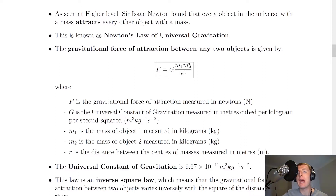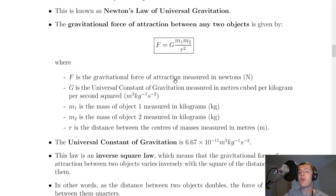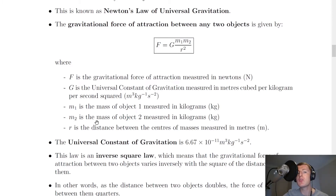F equals G times M1 M2 over R squared, where F is the gravitational force of attraction measured in Newtons. G is the universal constant of gravitation measured in metres cubed per kilogram per second squared, and that is on the data sheet in your exam. M1 is the mass of object 1 measured in kilograms, M2 is the mass of object 2 measured in kilograms, and R is the distance between the centres of masses measured in metres.